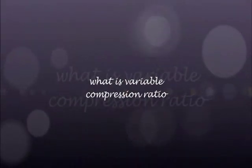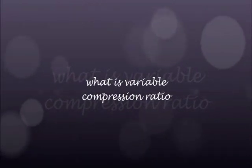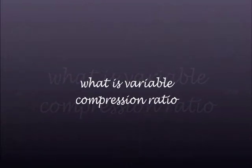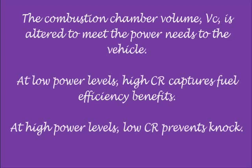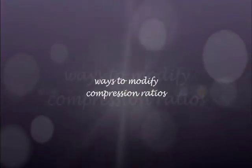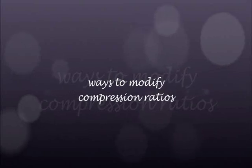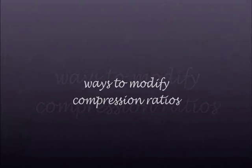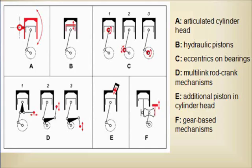In a variable compression ratio (VCR) engine, the combustion chamber volume is altered to meet the power needs of the vehicle. At low power levels, a high compression ratio captures fuel efficiency benefits. At higher power levels, a low compression ratio prevents knock. There are several methods to modify the compression ratio.